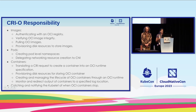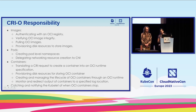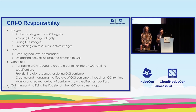Here's an overview of what CRI-O is responsible for when spinning up containers. First, it authenticates your images with the OCI registry and verifies the image — it can now use SigStore for that as well. It pulls the image if you don't have it, and provisions disk resources. For pods, it creates pod-level namespaces and delegates networking to the CNI plugin. For containers, it translates CRI requests from the Kubelet into an OCI spec, starts the container, monitors and redirects output back to the Kubelet, transfers logs, and provisions disk resources.